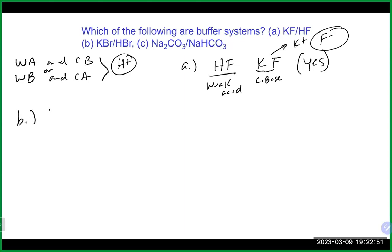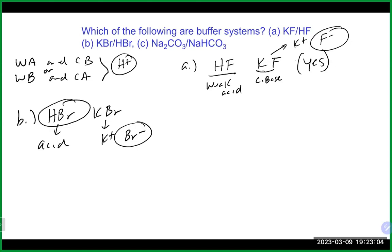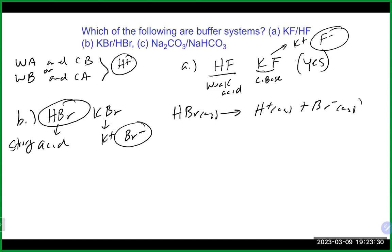Moving to B: HBr and KBr. These two are related to each other, but HBr is a strong acid, which means it cannot be a buffer. Since it's a strong acid, it will 100% dissociate, and the only thing in solution will be Br⁻. It won't be able to set up equilibrium and keep both parts in solution, so it is not a buffer.